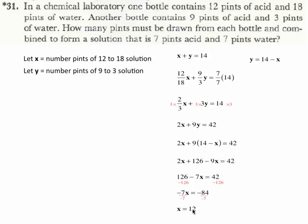So that tells us that we have 12 pints of 12 to 18 solution. And 14 take away 12 is 2, and 2 pints of 9 to 3 solution.